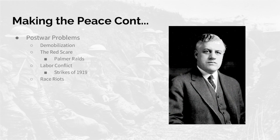Labor conflict — Strikes of 1919: many strikes took place mainly for higher pay in the United States during this time. Most were peaceful and none were really successful. Race riots: the Great Migration increased racial tensions in the North, and race riots erupted in northern states. In 1919, the worst was the Chicago race riots, where 40 people were killed and 500 were injured. There were also severe lynchings and violence in the South — the most violent period in the South.